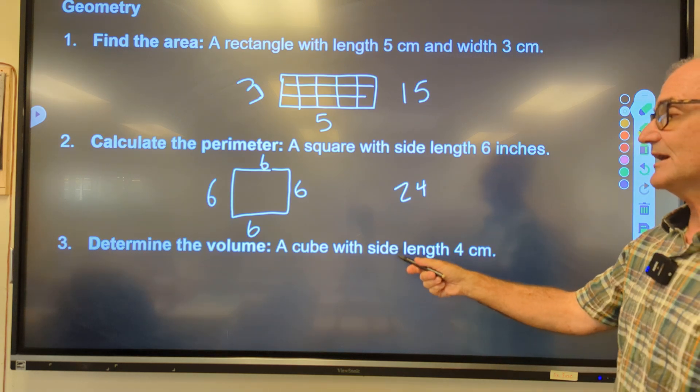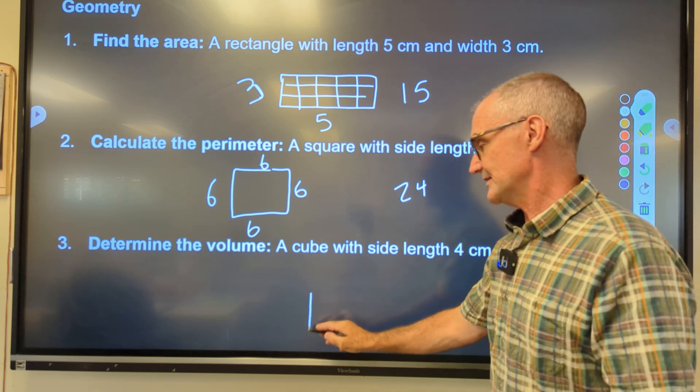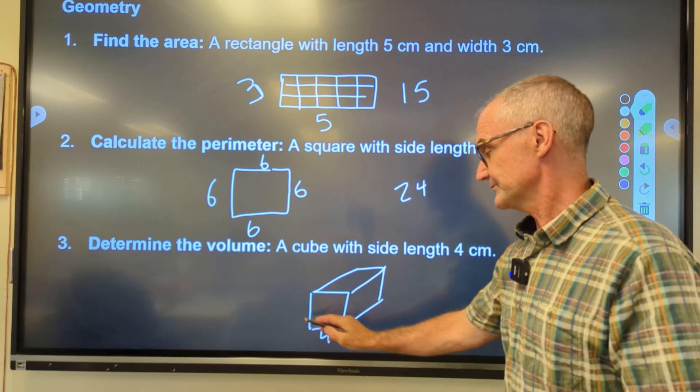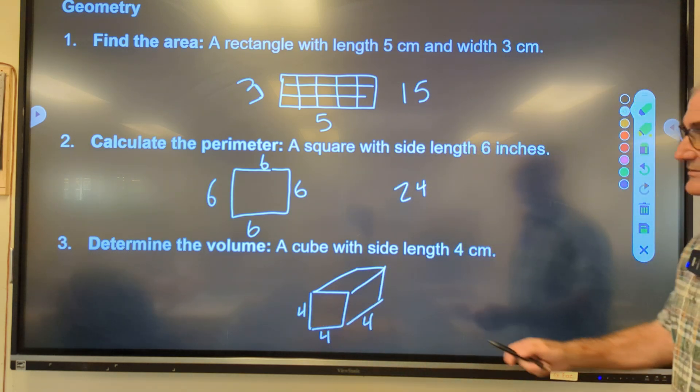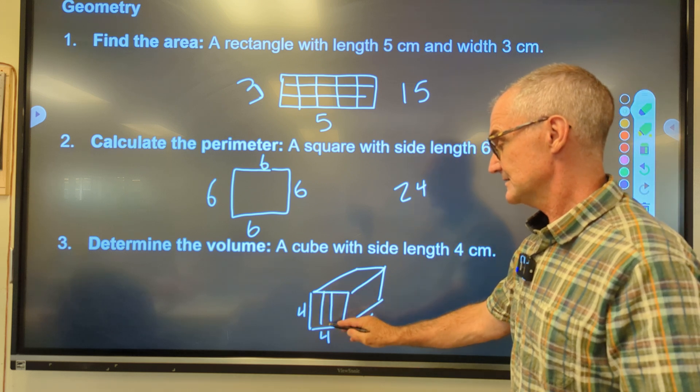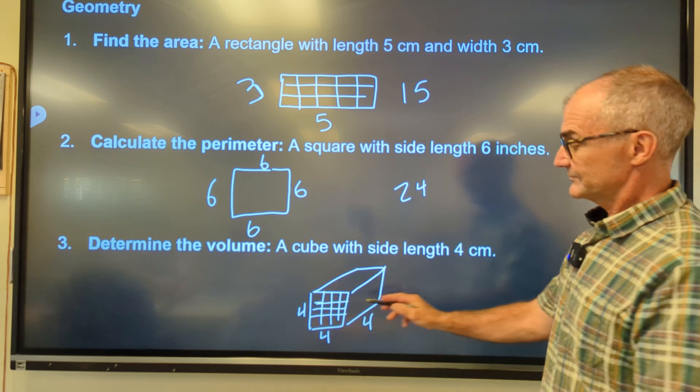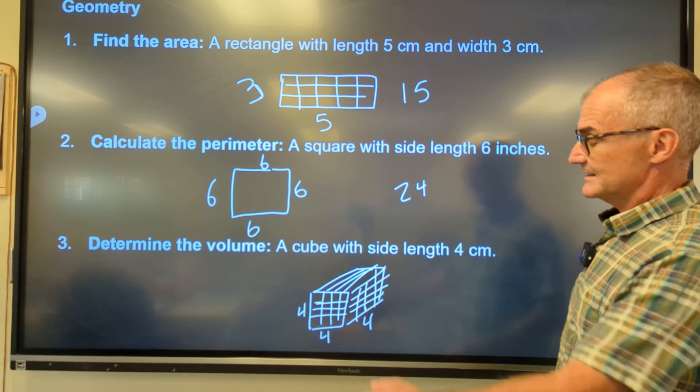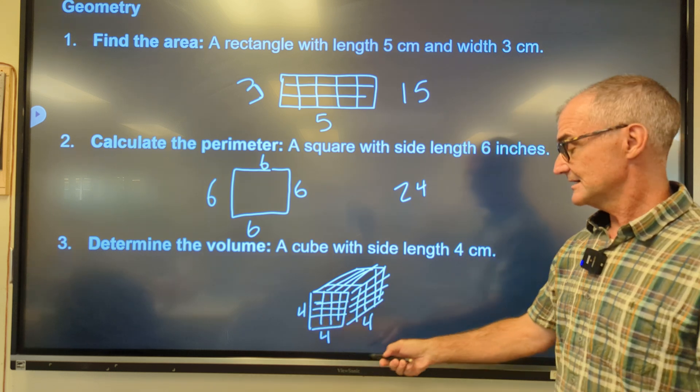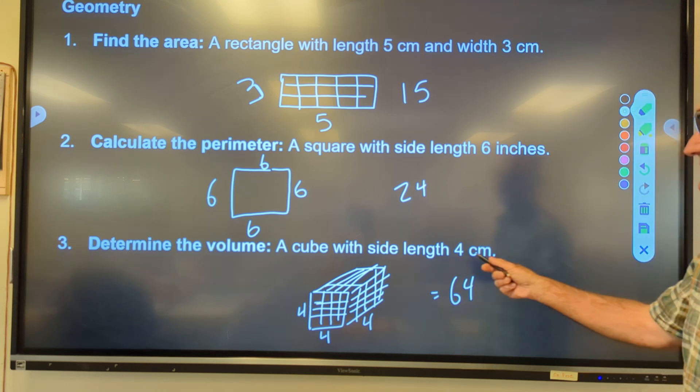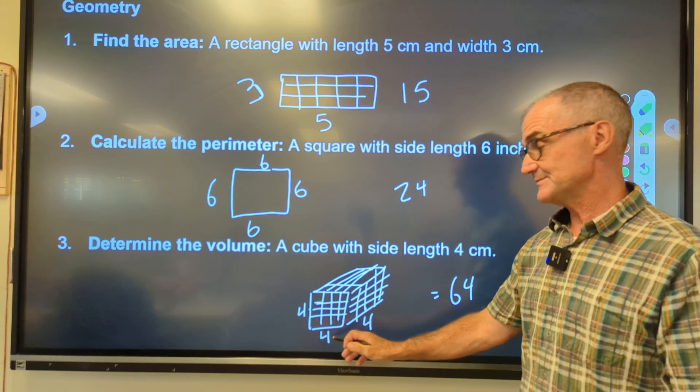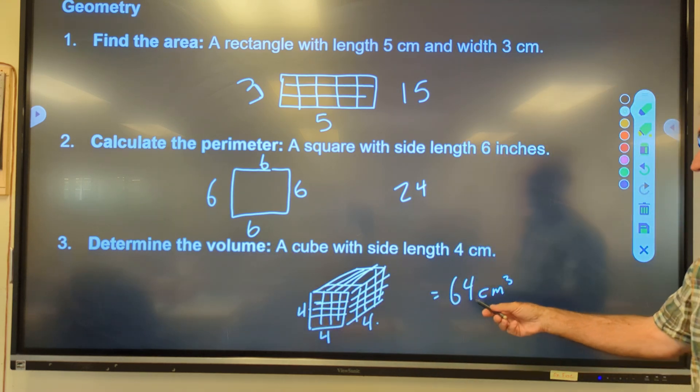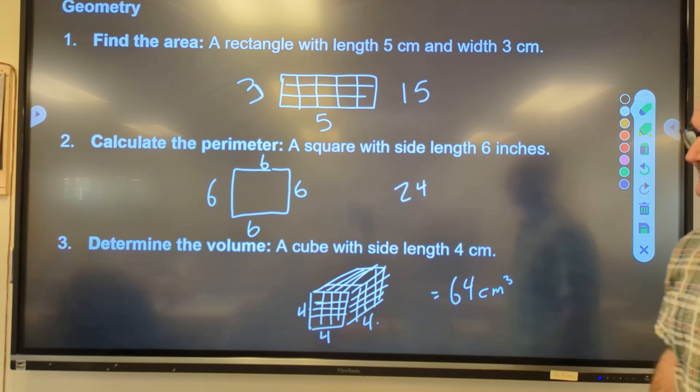And then lastly, number 3, determine the volume, a cubic measurement, of a cube with side length 4. So I have a cube, which is a square with the same depth as the length of side. So this is 4, this is 4, and my depth going back is 4. So this is going to be 4 times 4, 16 squares here, by 4 more this way. So I'm going to have to count up all these squares. The way I count up all those squares is 4 times 4, 16 times 4, 64. This one has units attached to it. So I would have centimeters times centimeters, centimeters squared, times centimeters, centimeters cubed. It is a volume measurement, so my answer is going to be a cubic measurement.